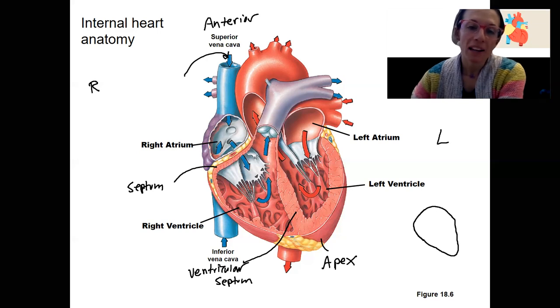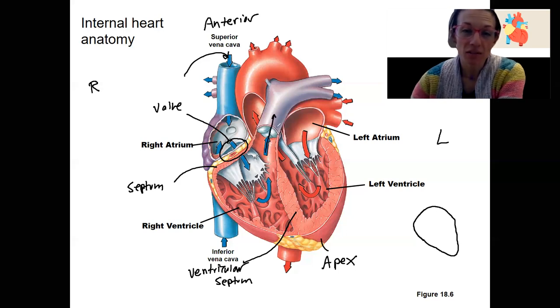So that comes into the right atrium, which then is going to pass through a valve, just going to name it valve for now, into the right ventricle. The right ventricle, fairly muscular. It's going to contract and cause blood to flow out through this valve.